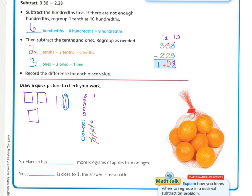Breaking that tenth into ten hundredths so we can take away eight. So we took away five, six, seven, eight hundredths, then two more hundredths, and then two ones. And what are we left with? We are left with one and eight hundredths.